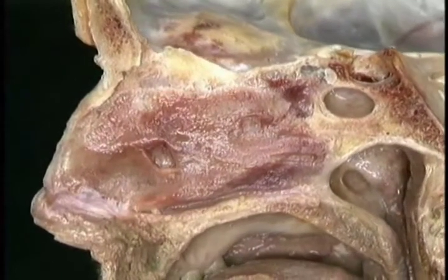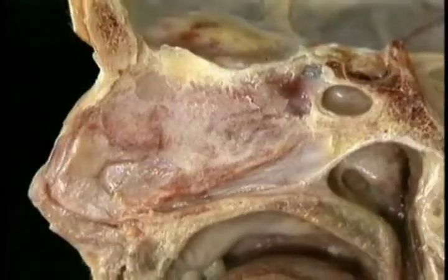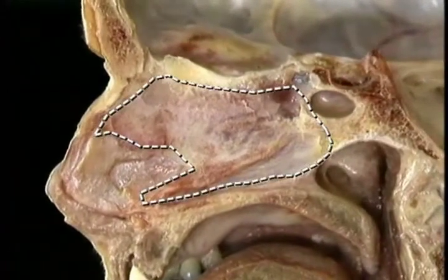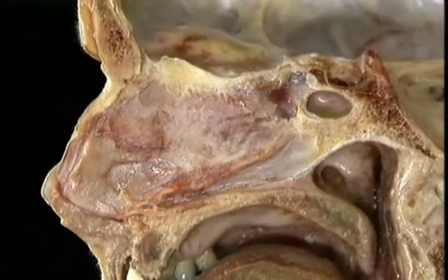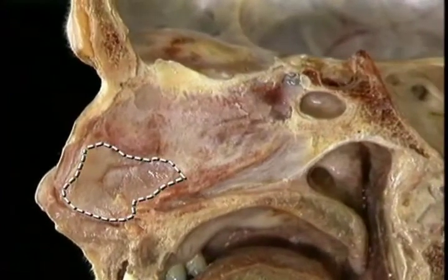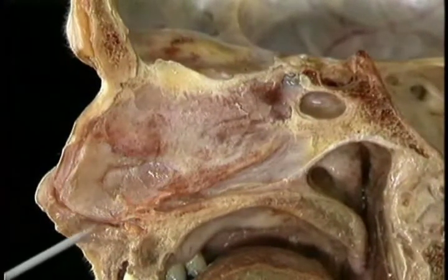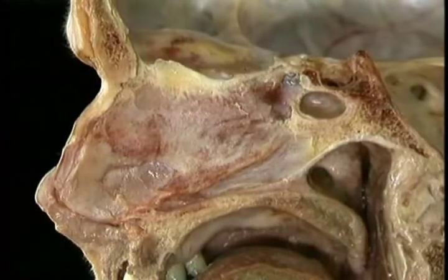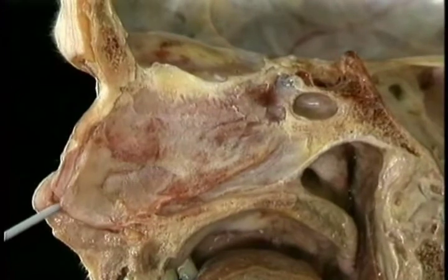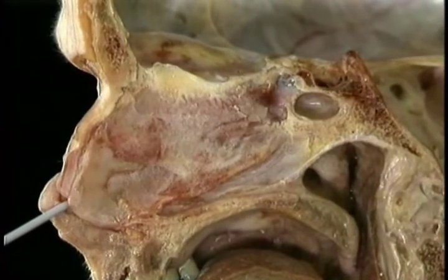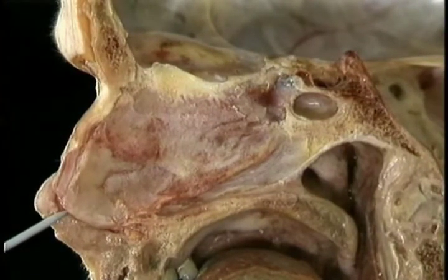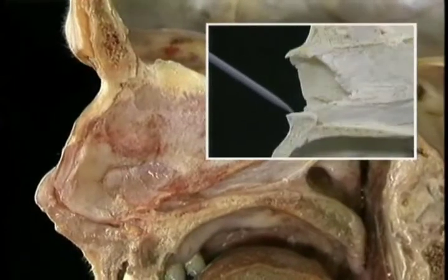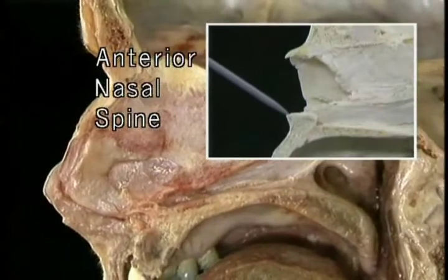Now we'll remove all the mucous membrane from the septum to see the underlying cartilage and bone. This part of the septum is bone; this part is formed by the septal cartilage. In front, the septal cartilage forms the bridge of the nose, then runs downward and backward to attach to the anterior nasal spine on the maxilla.